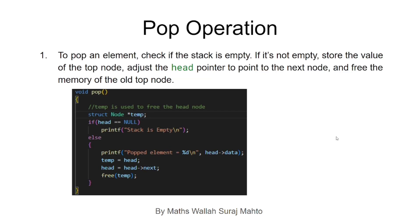The pop operation: first we check if the stack is empty. If it is, we return from this void function, stopping the operation. Otherwise, we save a temporary node, because in the pop operation we remove the upper element and free that node from memory using C's free() method. After that, we perform head equals head->next, meaning the next element becomes the new head.